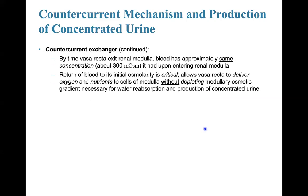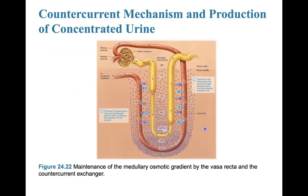By the time the vasa recta exits the renal medulla, blood has approximately the same concentration it had upon entering. This return of blood to its initial osmolarity is critical. The vasa recta delivers oxygen and nutrients to the cells of the medulla without depleting the medullary osmotic gradient, which is necessary for water reabsorption and the production of concentrated urine. You can see the juxtamedullary nephron and how concentrated urine is formed, with solutes moving back and forth between the interstitial fluid and the filtrate.